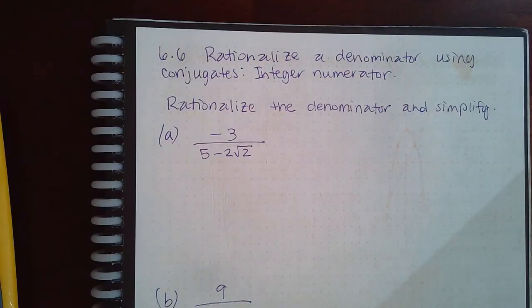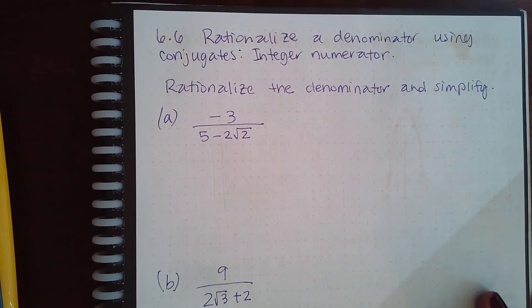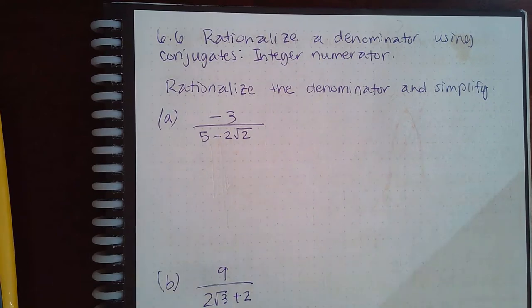So here I have rationalized the denominator using conjugates. So now we have binomials in our denominator. And if you remember from the conjugates topic, every time we multiplied the conjugates together, we ended up with an expression that didn't have any more square roots in it.